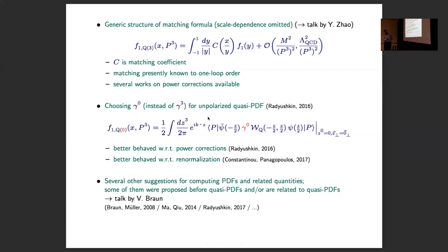I think Radyushkin was the first one to explicitly suggest, if I'm not mistaken, to use for the unpolarized distribution, rather than working with gamma 3, to write it with gamma 0. He at the time argued that it's better behaved with respect to power corrections. The second point is relatively strong, at least in this machinery: gamma 0 is better behaved with respect to renormalization.